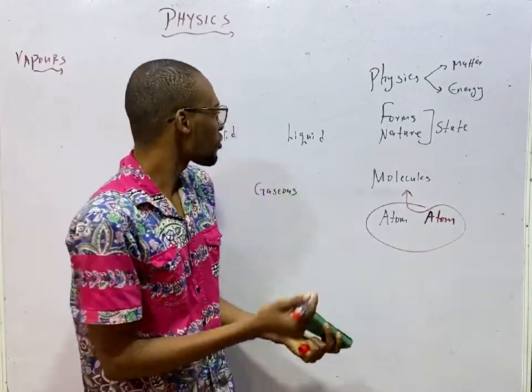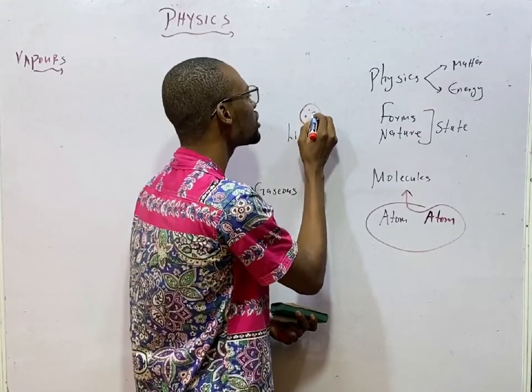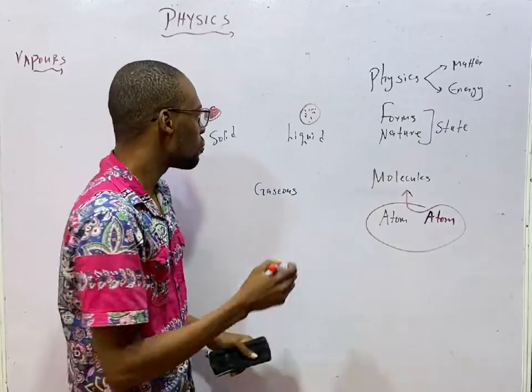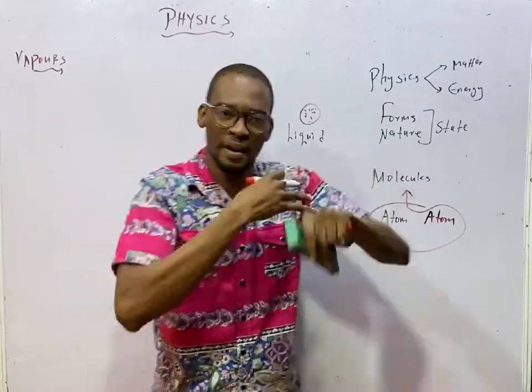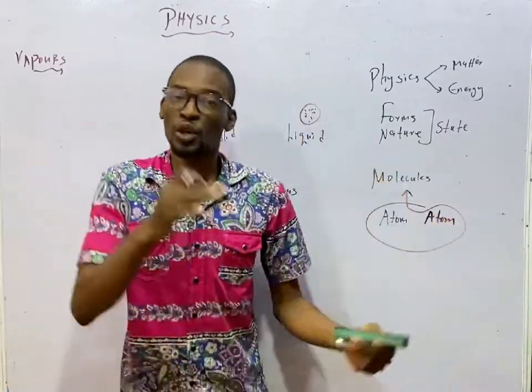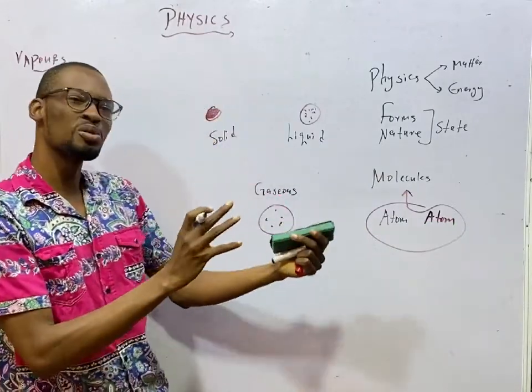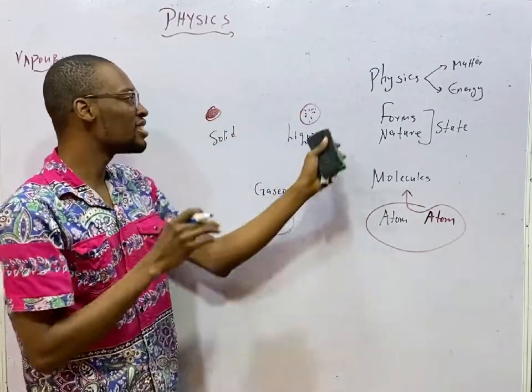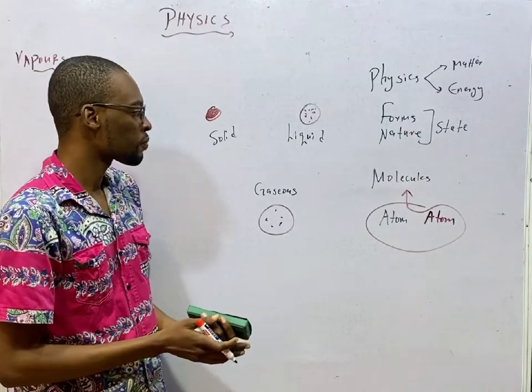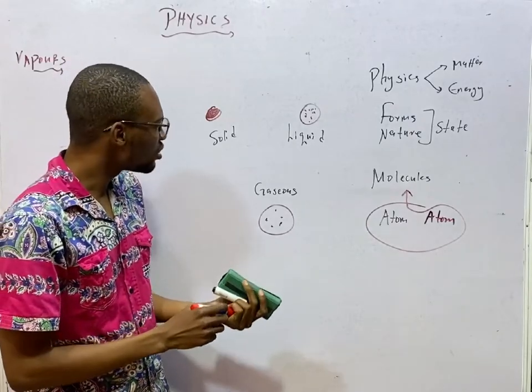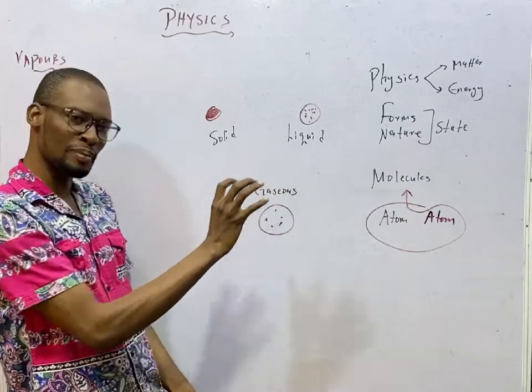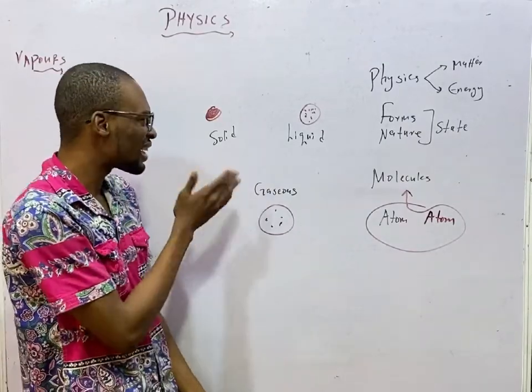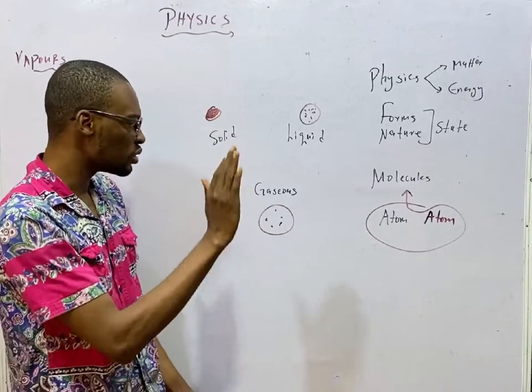In liquids, the molecules are somehow far apart. But for gases, the molecules are so far apart and they exhibit random motion. Because they are so far apart, gases do not have definite shape. They take the shape of any container. Looking at this state of matter, change of state comes to mind, which I have also treated. Matter can change from one state to another.